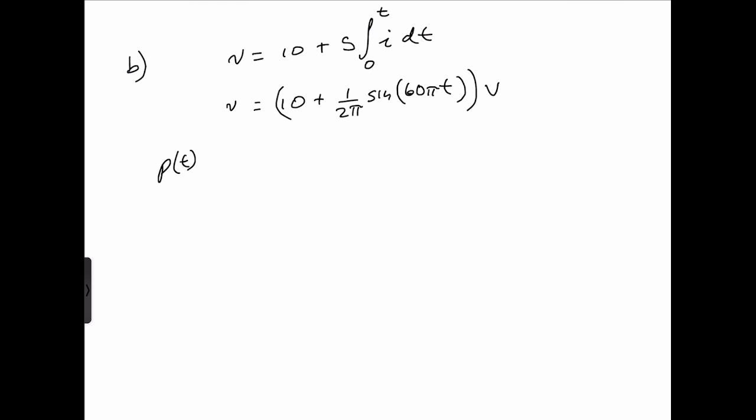So we can go ahead and multiply the current times our voltage. So p of t is equal to 50 cosine 60 pi times t, plus 5 over 2 pi sine 60 pi times t, times cosine 60 pi times t. If we evaluate that in 0.005 milliseconds, we'll get 29.768 watts.